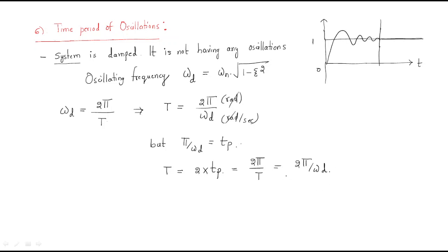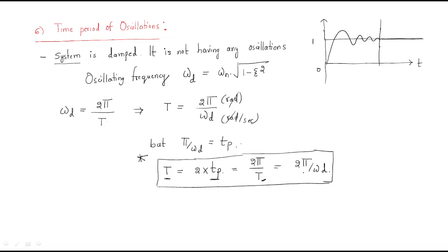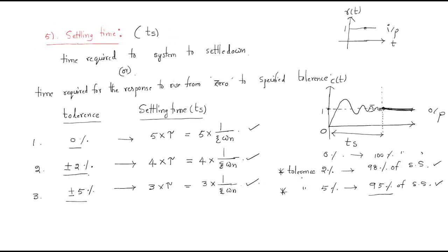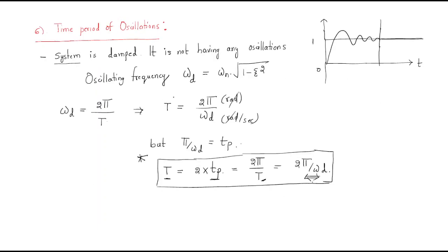There is a relationship between the time period of oscillation, the peak time, and the damped frequency formula T = 2π/ωd. These are the parameters to analyze in the second-order under-damped system with unit step input: peak overshoot, settling time, and time period of oscillations.